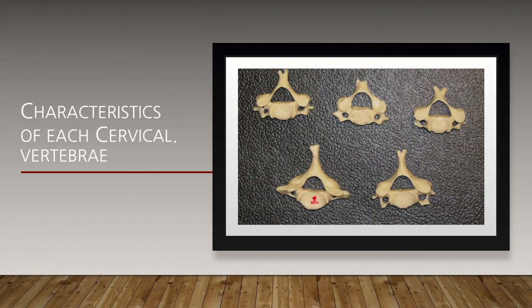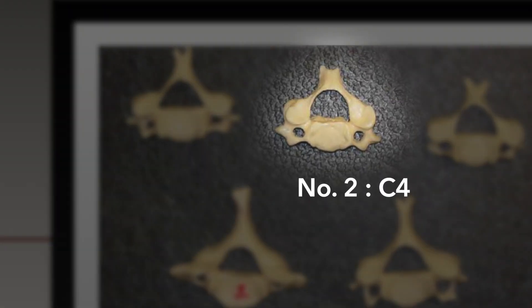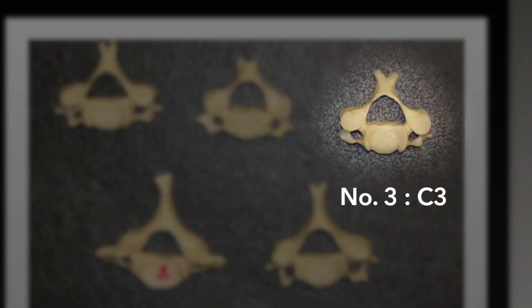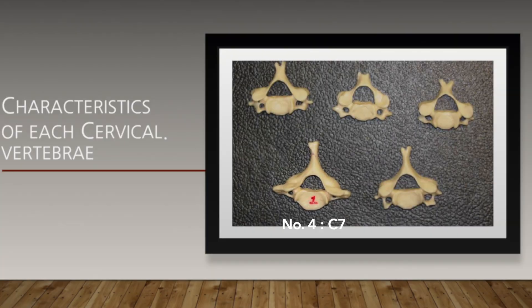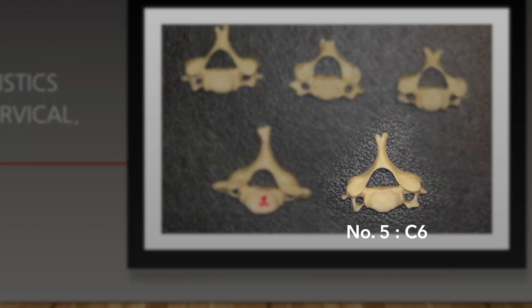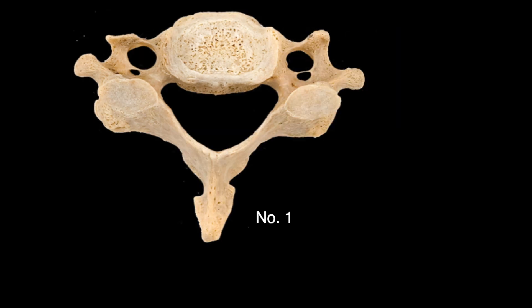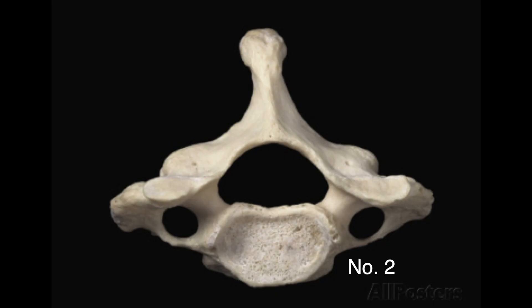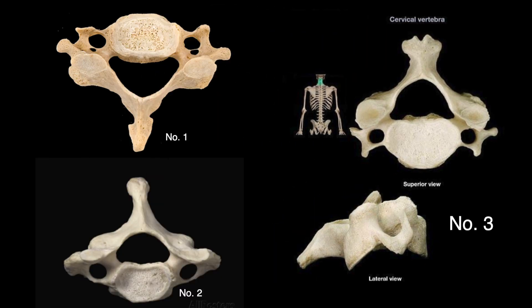Can you tell the difference between these cervical vertebrae? Please guess the level. Now the answer: Number one is C5, number two is C4, number three is C3, number four is C7, number five is C6. One more time: number one is C5, number two is C7, number three is C6.